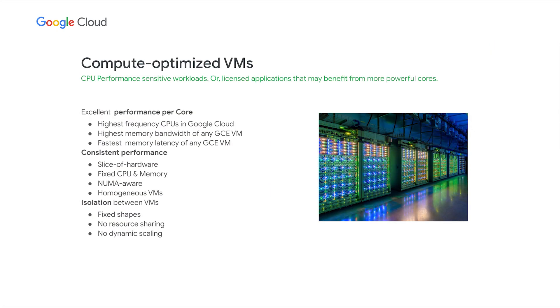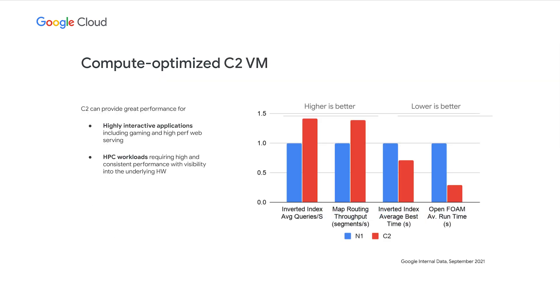To meet the needs of these unique applications, we've developed compute-optimized VMs including the C2 family, offering a combination of excellent per-core performance, consistent performance, and isolation between virtual machines. As shown by benchmark results comparing C2 to the N1 family, C2 offers better per-core performance, low-latency high-bandwidth networking, and is designed to meet the needs of these unique applications. The standard machine types for C2 have a lower memory-per-core ratio, as these applications tend to focus on CPU needs rather than large amounts of memory per core.